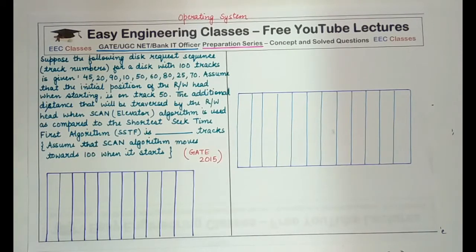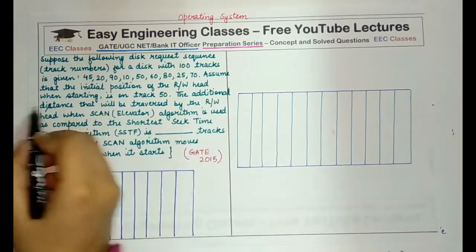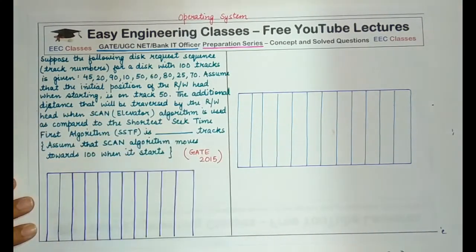So basically you are given a sequence of different track numbers that are requested and you have to find a comparison between the scan algorithm or the elevator algorithm and the SSTF algorithm, which is shortest seek time first algorithm, and you have to tell the difference. Please read the question carefully. It is asking additional distance that will be traversed.